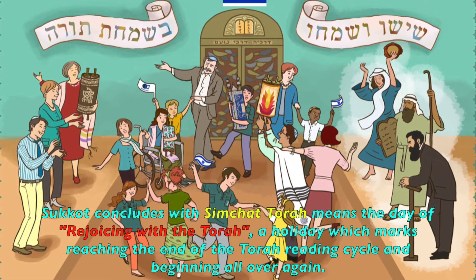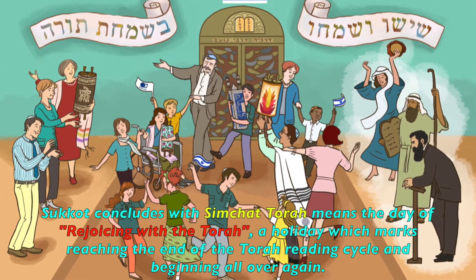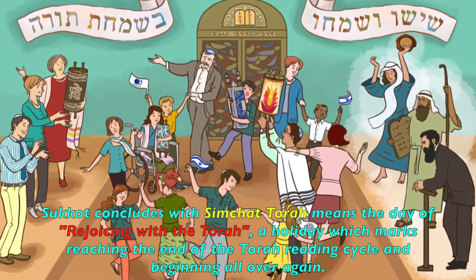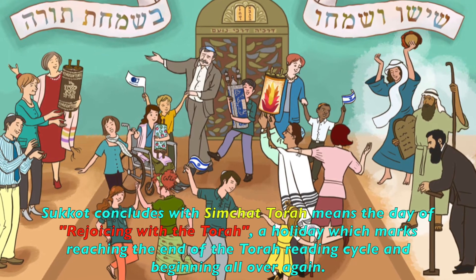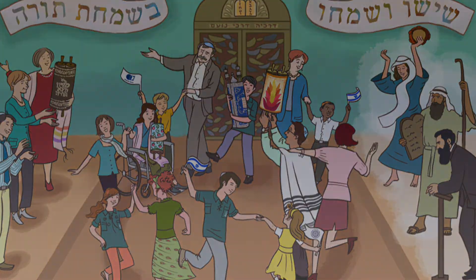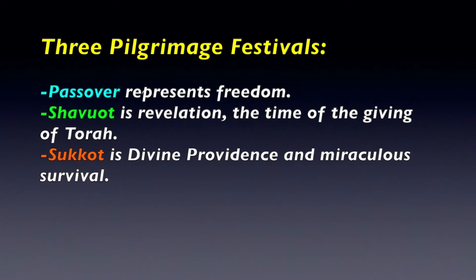Sukkot concludes with Simchat Torah, meaning the day of rejoicing with the Torah — a holiday which marks reaching the end of the Torah reading cycle and beginning all over again. To summarize, the three pilgrimage festivals each have a major theme: Passover represents freedom, Shavuot is revelation and the giving of the Torah, and Sukkot is divine providence and miraculous survival.